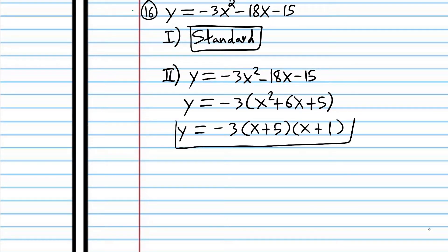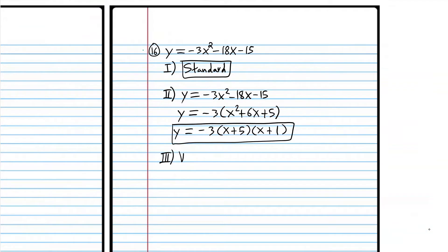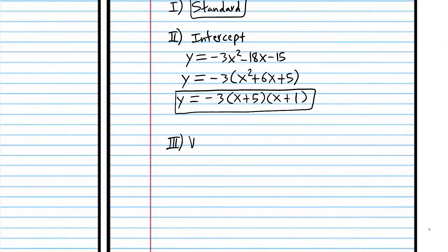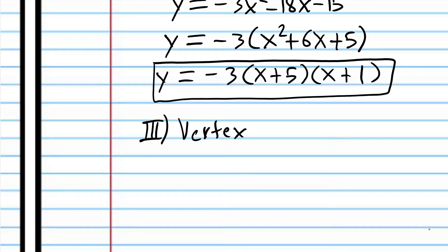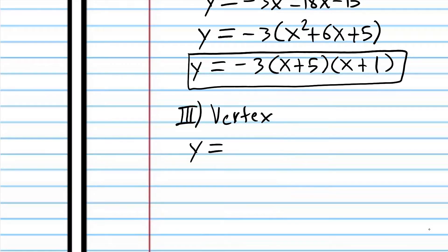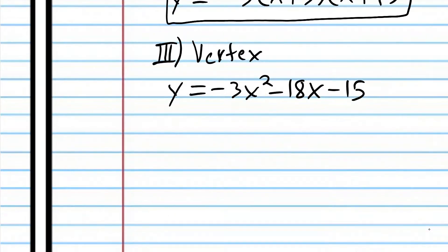Now we're going to factor what's left inside — we have a quadratic. What two numbers multiply to 5 and add up to 6? That's 5 and 1. So that is intercept form. Now we're going to convert to vertex form.